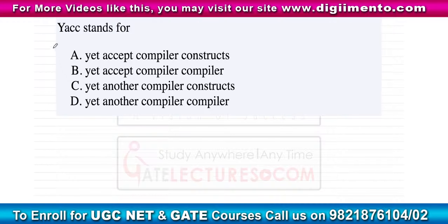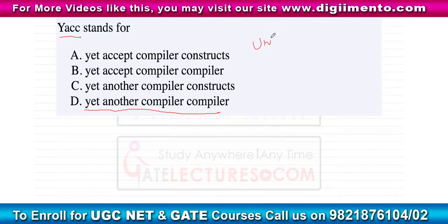YACC stands for Yet Another Compiler Compiler. It is a computer program for the Unix operating system. It is basically a LALR parser generator — LALR stands for Look Ahead Left to Right.